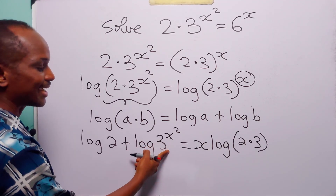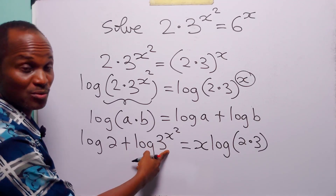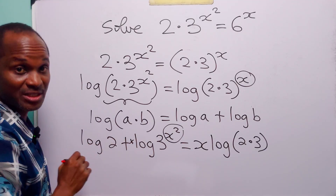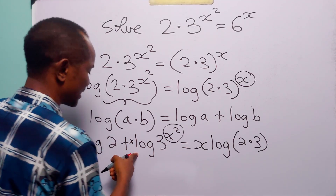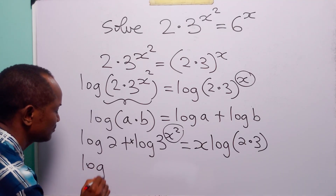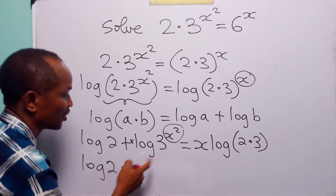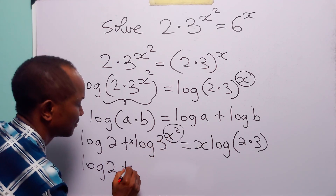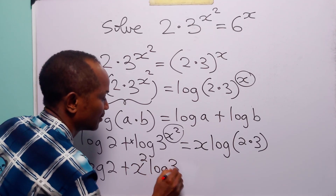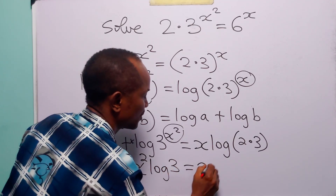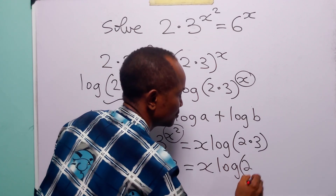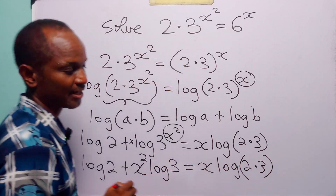We also need to apply the power rule on the left-hand side — we will bring down x squared to the front of log 3. When we do that, on the left-hand side we have log 2 plus x squared log 3, and this is equal to x log 2 times 3.